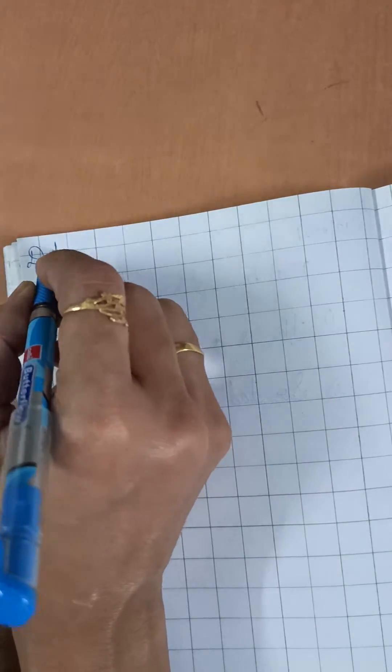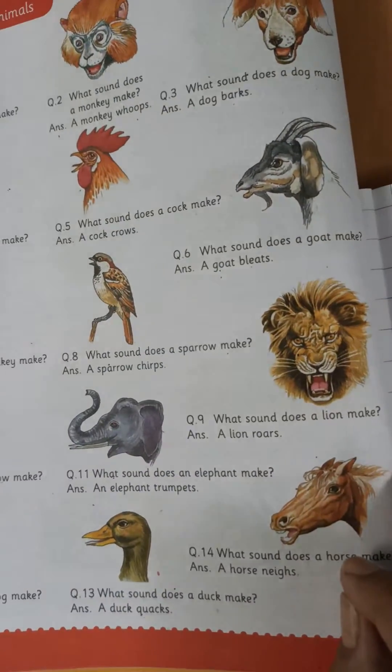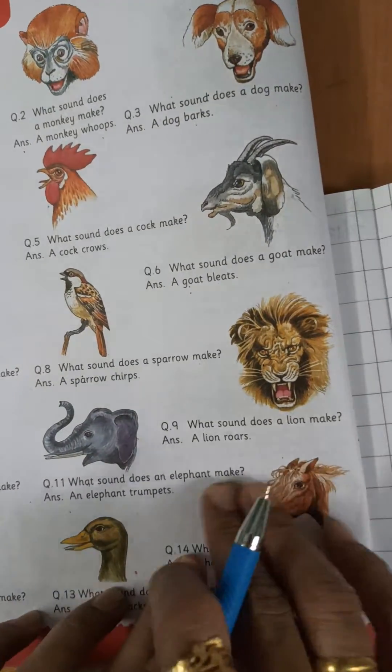Date is 7th December, standing line 2021. Okay, now we are going to learn new animal lion.